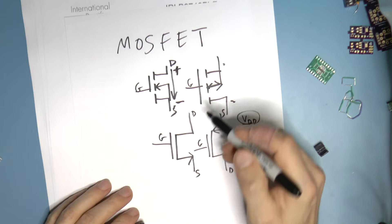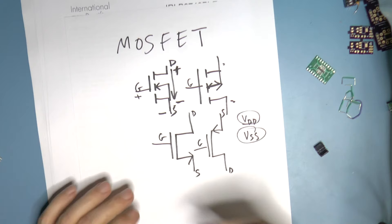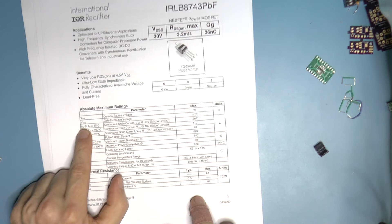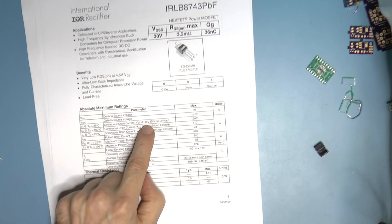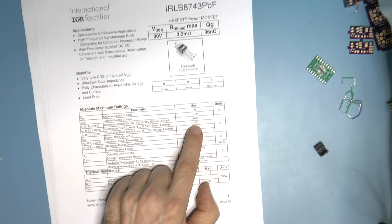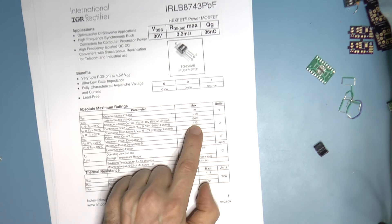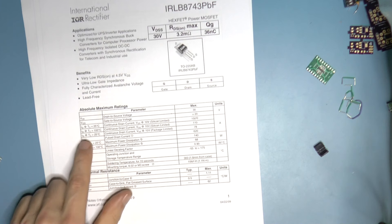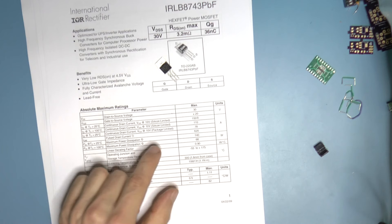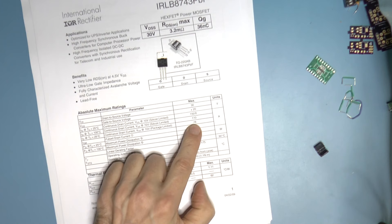From drain to source you can have at most 30 volts, but from gate to source you can have anything from plus 20 to minus 20. The gate can go below the source by 20 volts or above the source by 20 volts. The continuous drain current with VGS at 10 volts is 150 amps — that's incredible. At 100 degrees they derate it to 110 amps, and then package limited is 78 amps.